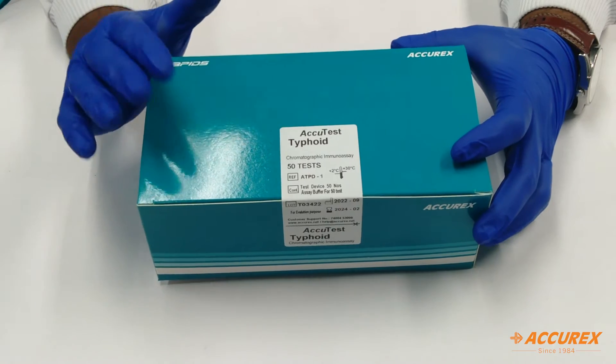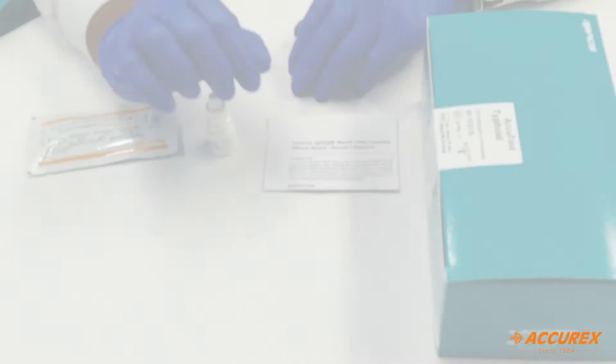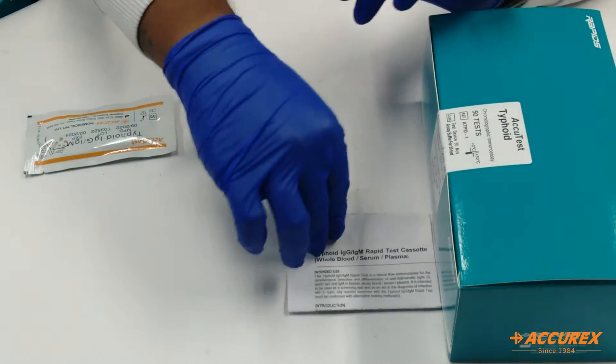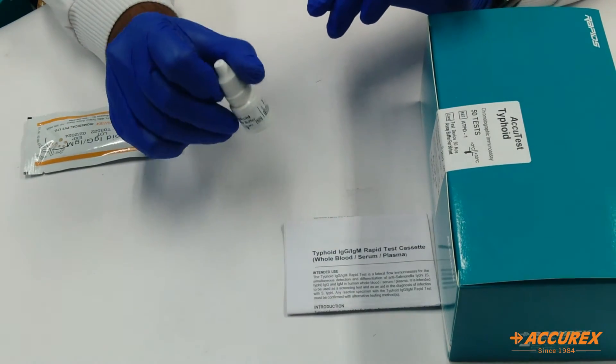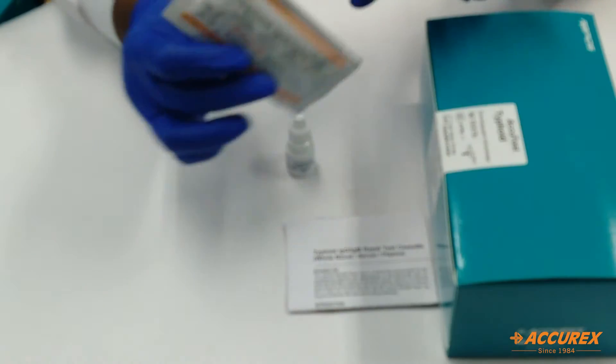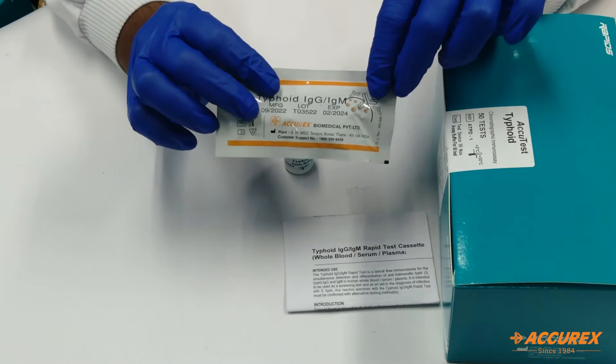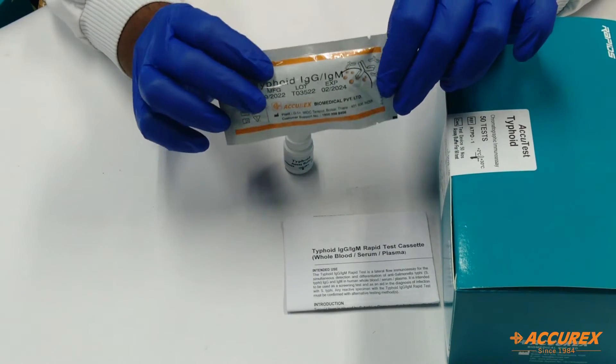Next, we will see the components inside the box. Inside the box, you will find the pack insert where you can refer to the procedure, second is a buffer, and third is the test card. In the test card itself, we will get the dropper also for testing. Next, we will see how to use this card.